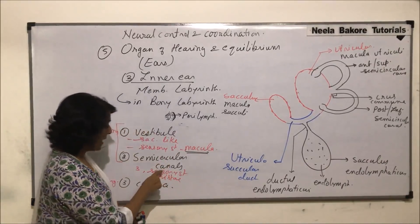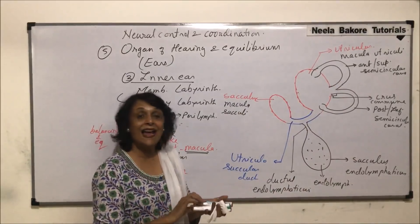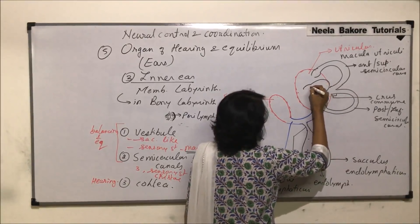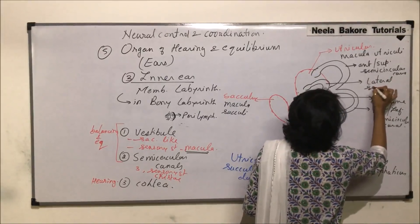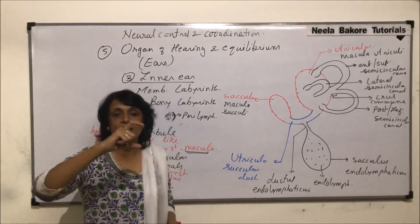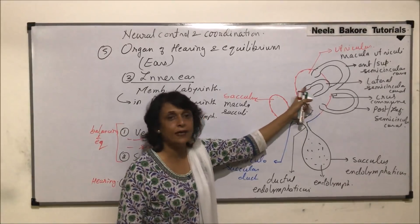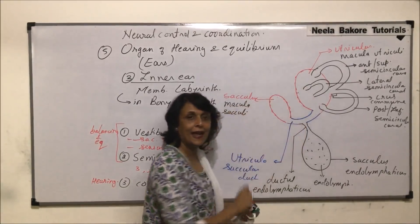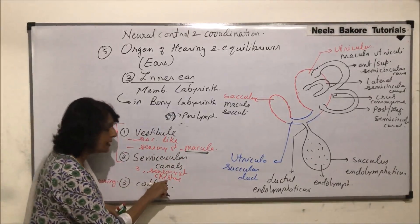Now let us draw the lateral canal. The lateral canal has its ampulla and opens into the utriculus. So all three semicircular canals are C-shaped or loop-like and open into the utriculus from both ends, with one end having a swelling — the ampulla. So the anterior canal has its ampulla, the posterior canal has its ampulla, and the lateral canal has its ampulla. Each canal has one ampulla in which is present the crista.